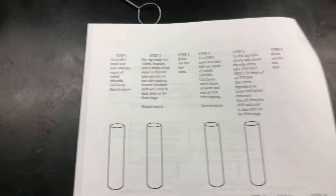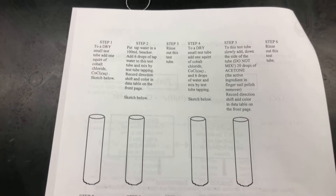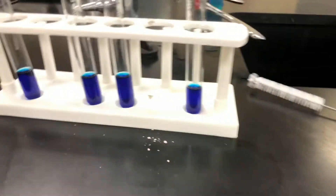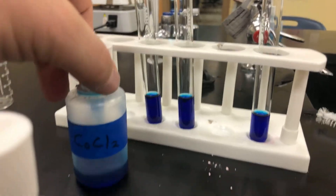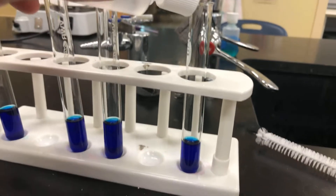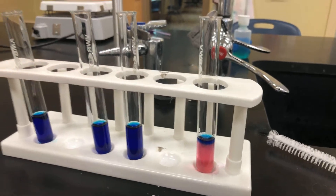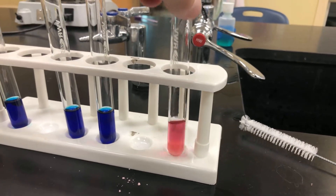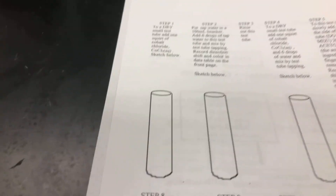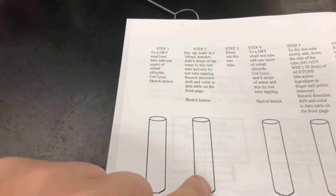Going to the second page, we have a series of different investigations. The first one says to add one squirt of cobalt chloride to a dry test tube, then add about six drops of water. I have all our test tubes set up with cobalt chloride already in there, so I'm going to take my water and add it to this first test tube. Watch and see if anything happens. This reaction has shifted. On your lab, color this first one blue — that's what we started with — and when we added the water, it shifted to pink.